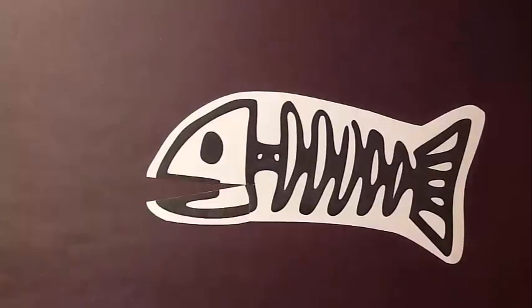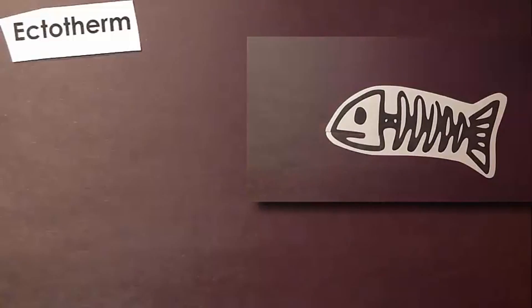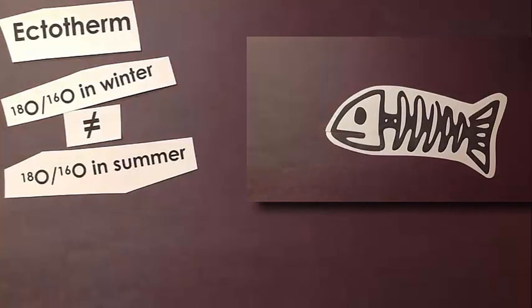So bones made in an ectotherm when it was cold out would have a different oxygen isotope ratio than bones produced or remodeled by the same animal when it was warmer. Some of its bones would have had different ratios than others at the time it died and fossilized just because they were remodeled more recently and under different temperatures.